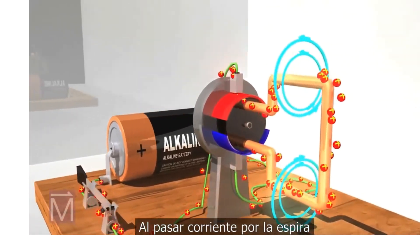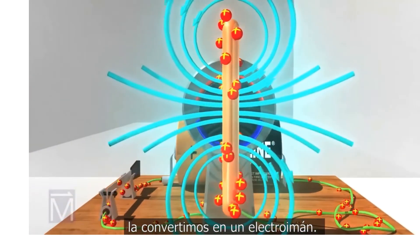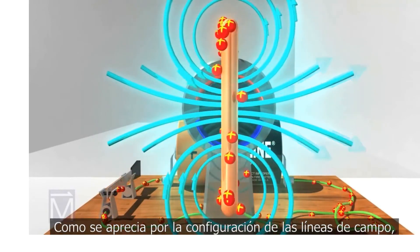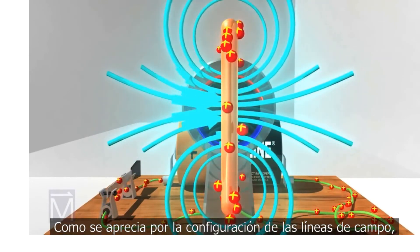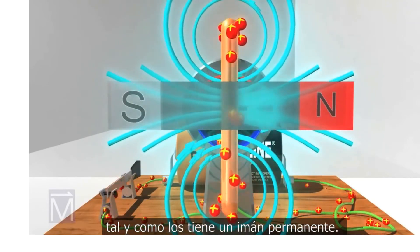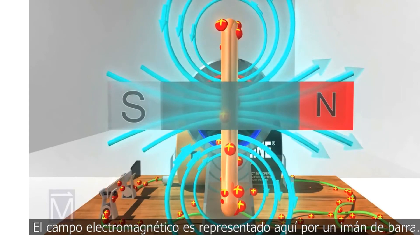By passing current through this coil, we've turned it into an electromagnet. As you can see from the way the magnetic field lines in the coil converge, this electromagnet has a north and a south pole just like a permanent magnet. The electromagnet's field is represented here by a bar magnet.